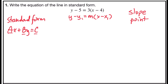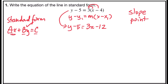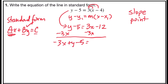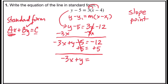We're going to transform the equation y minus 5 equals 3 times x minus 4 into standard form. Starting with the distributive property: y minus 5 remains on the left side. 3 times x is 3x, and 3 times negative 4 is negative 12. Now I have the y on the left side. The x term is on the right side, so I'm going to subtract 3x from both sides, giving me negative 3x plus y minus 5 on the left. 3x minus 3x cancels out, and 0 minus 12 is negative 12. Adding 5 to both sides gives negative 3x plus y equals negative 7.